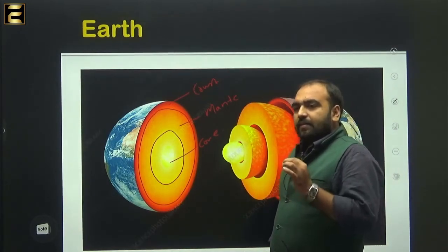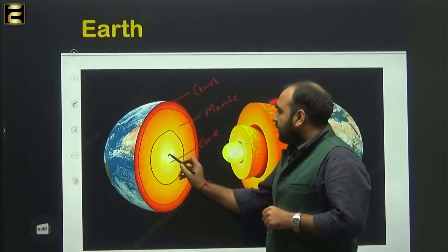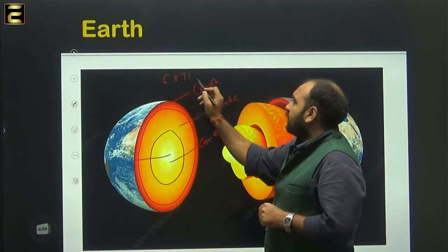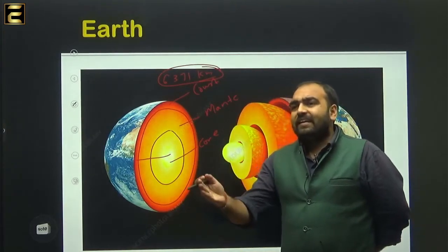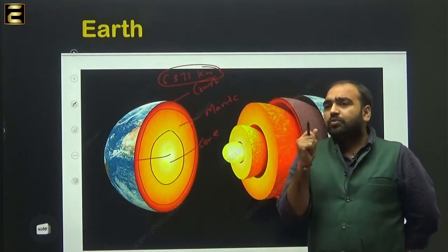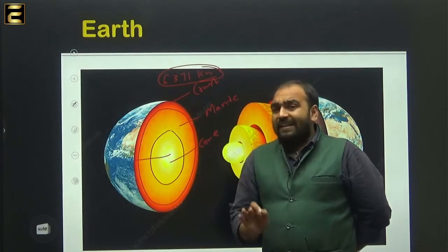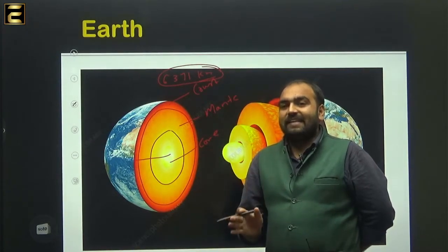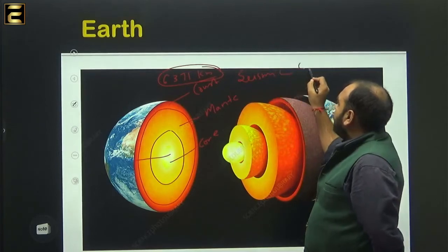The central part of the earth and the distance up to the upper surface is 6371 kilometers, and it is very difficult for anyone to reach the core. So the question is: how do we get information about the internal structure of the earth? The answer is that information about the earth's interior is basically based on the study of seismic waves.